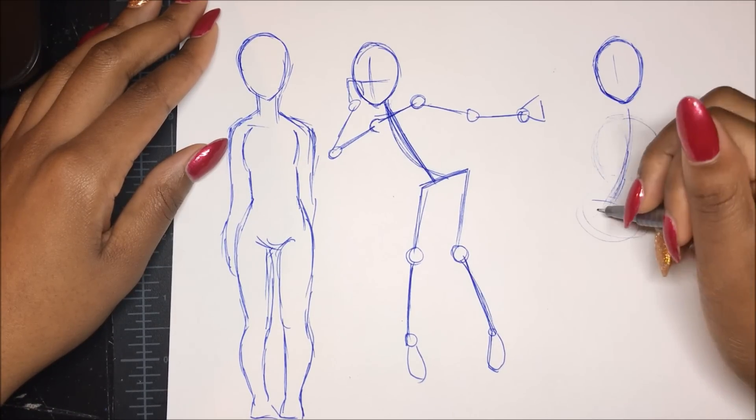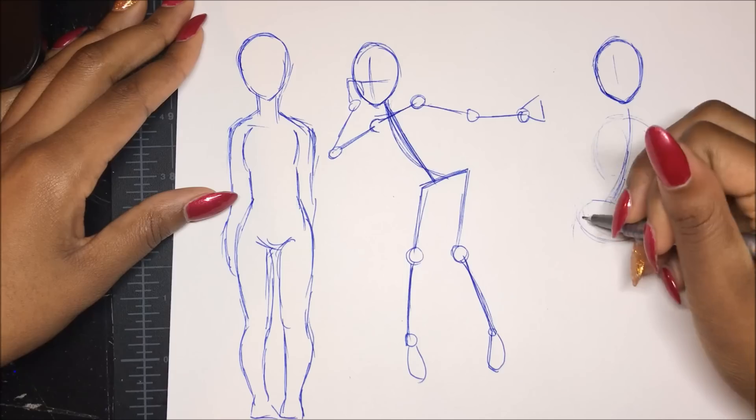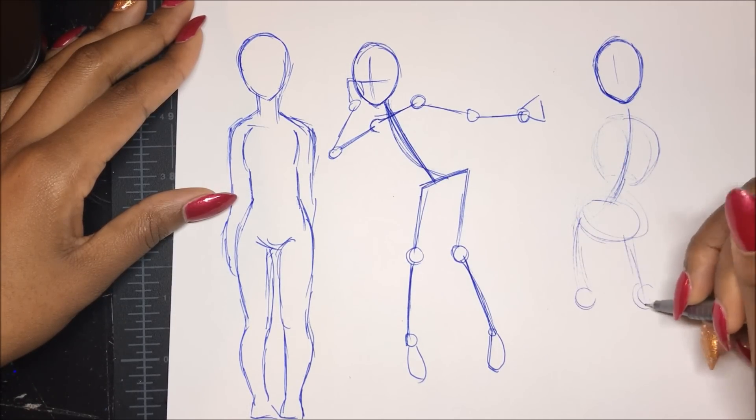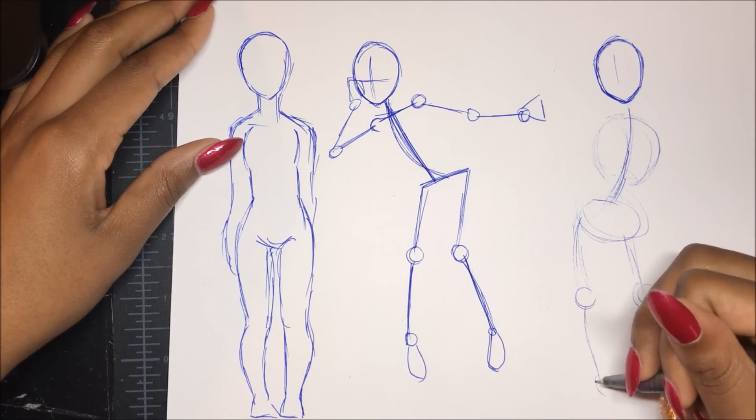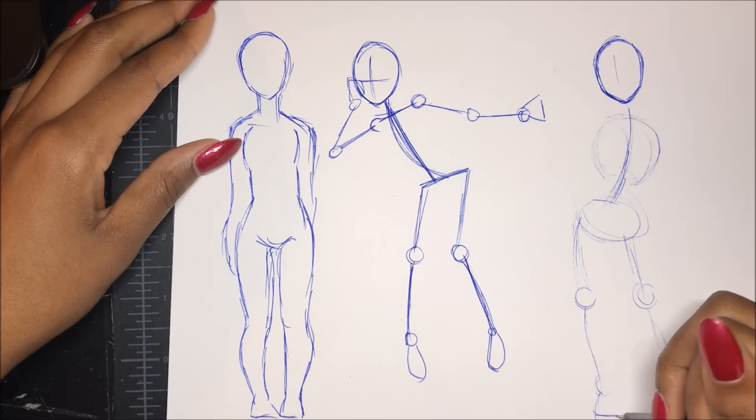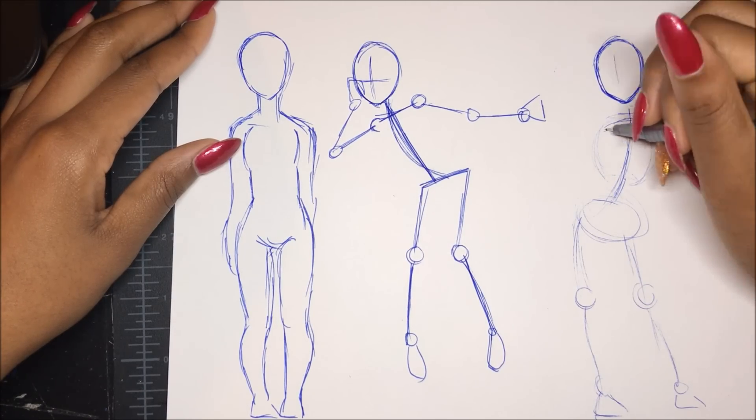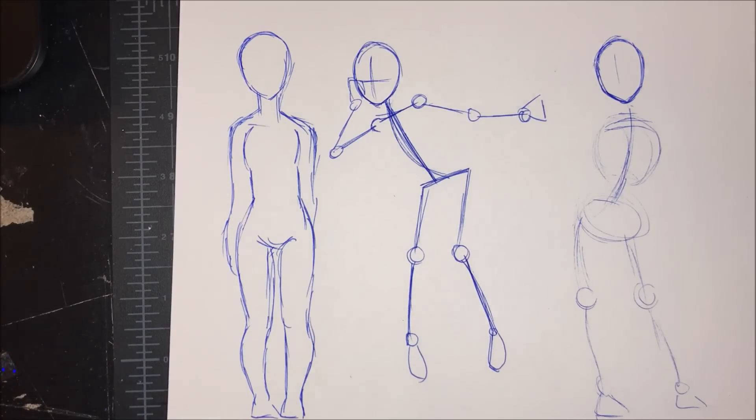This is actually called the line of action, which is basically an imaginary line that runs through the spine and it can actually help you a lot with your poses and how not to make them very stiff. I'm just going to do a couple things I learned from the stick figure method here so you guys can actually keep up a little bit.